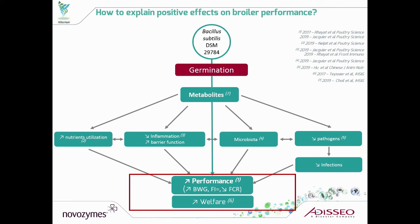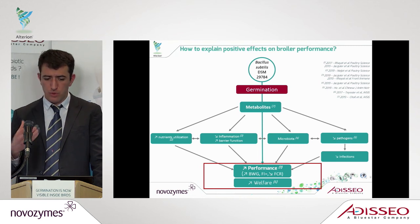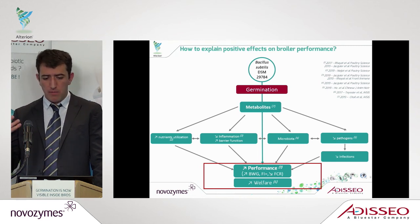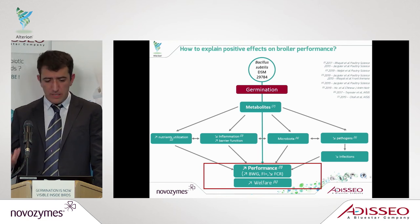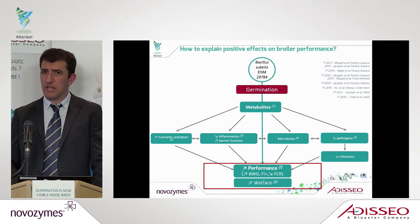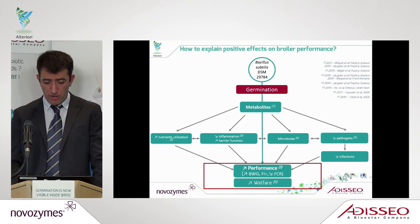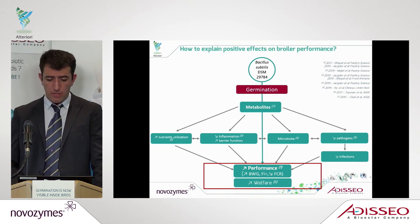Coming back to my first introductory slide: we put the emphasis on germination — proving that the spores placed in the feed become active in the gut, and by being active in the gut, they can produce metabolites. These metabolites will of course have an effect on different gut health parameters, justifying the mode of action and ultimately the increase in performance and welfare of the animal.